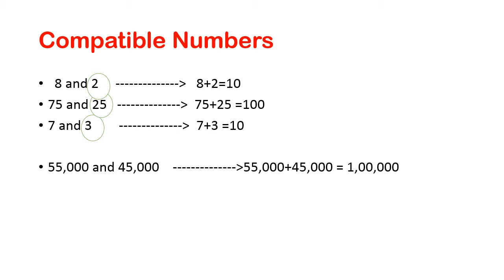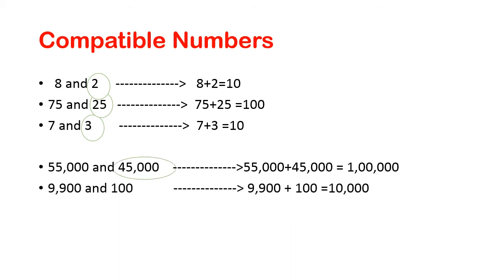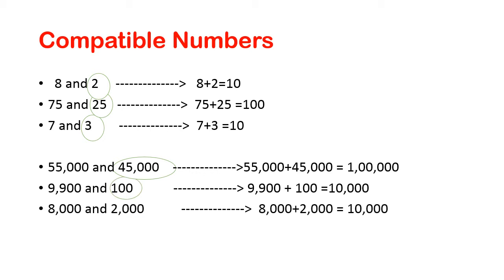When rounding off 55,000 to the nearest 1 lakh, we have to add 45,000. Then we get 1 lakh, so 45,000 is the compatible number. Also, 9,900 and 100: when we add 100 to 9,900 we get 10,000, so 100 is the compatible number. And 8,000 and 2,000: when we add 2,000 to 8,000 we get 10,000, so 2,000 is a compatible number. These are the examples for compatible numbers.